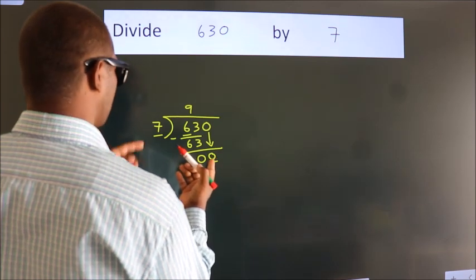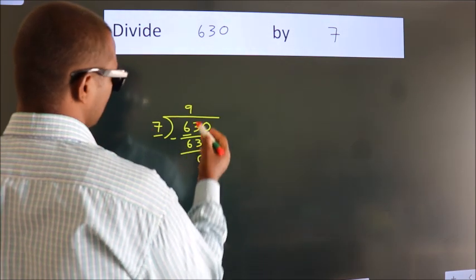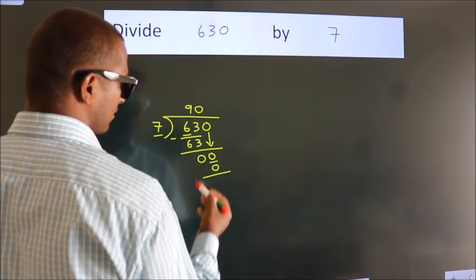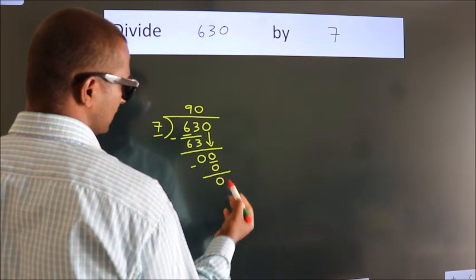When do we get 0? In 7 table. 7 times 0, 0. Now we subtract. We get 0.